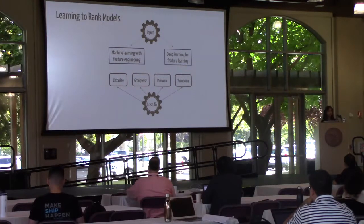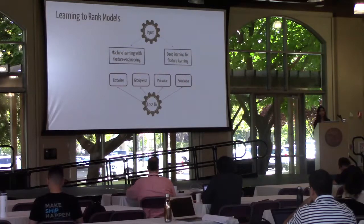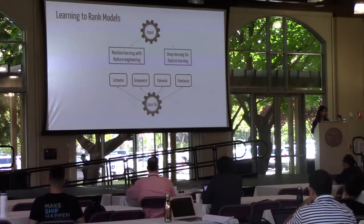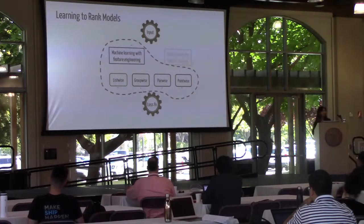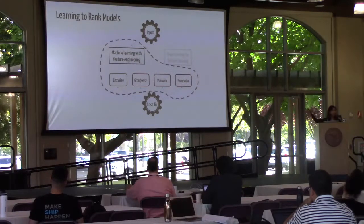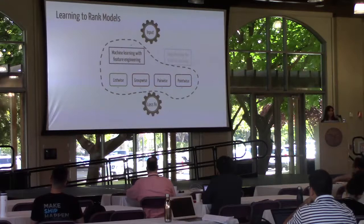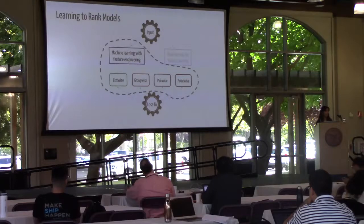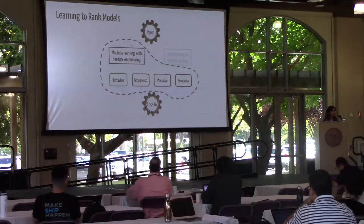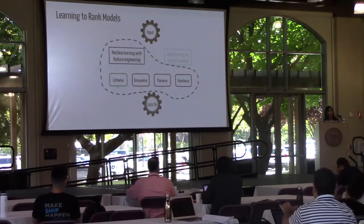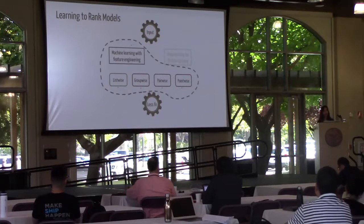Learning-to-rank models can also be categorized based on the loss function they are optimizing, which can be pair-wise, point-wise, list-wise, or least-wise. There are several models for optimizing any of these loss functions where the input is based on human-engineered features, and list-wise models have shown to have higher performance compared to the other models.